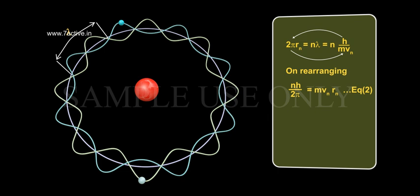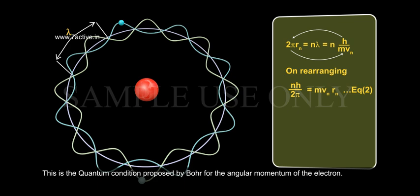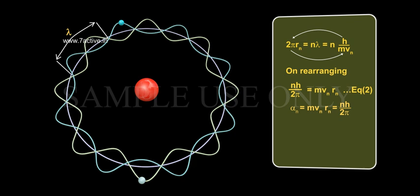On rearranging, equals to nh by 2π equals to MVnRn, equation 2. This is the quantum condition proposed by Bohr for the angular momentum of the electron.